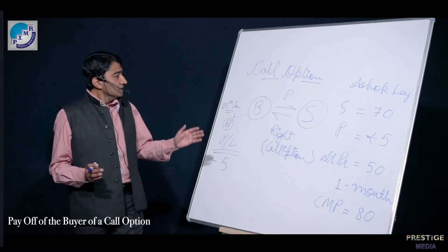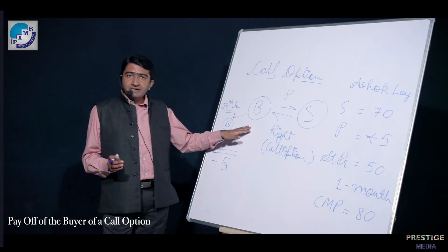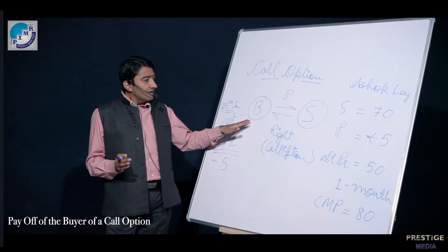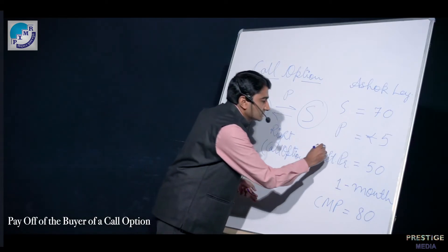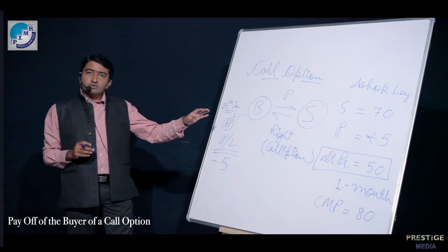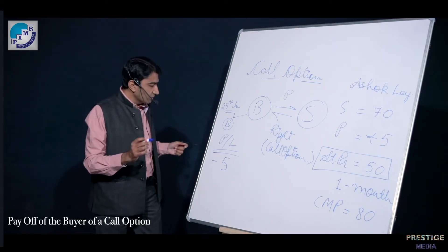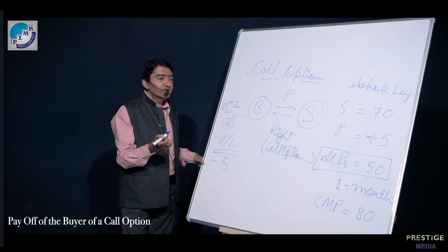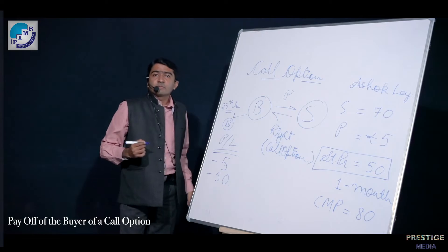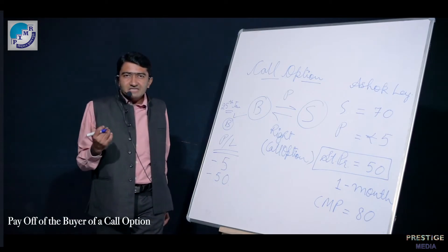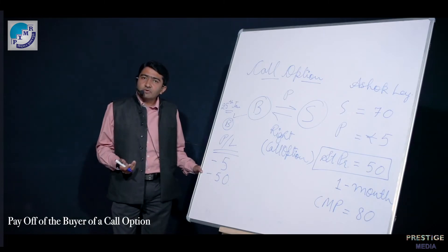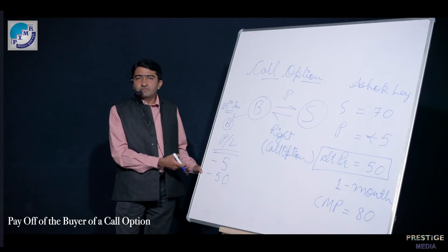The buyer has the right to purchase one share of Ashok Leland at Rs. 50 — the strike price or contract price. The buyer is going to exercise his right and purchase the share at Rs. 50. Since money goes out when we purchase something, it is an outflow, so we write a negative sign before Rs. 50.